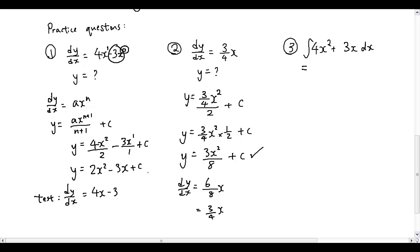So tick your answer if you have it correct. And the third one, find the anti-derivative of 4x squared plus 3x. So same thing, 4x cubed over 3 plus 3x squared over 2 plus c. And that's it.